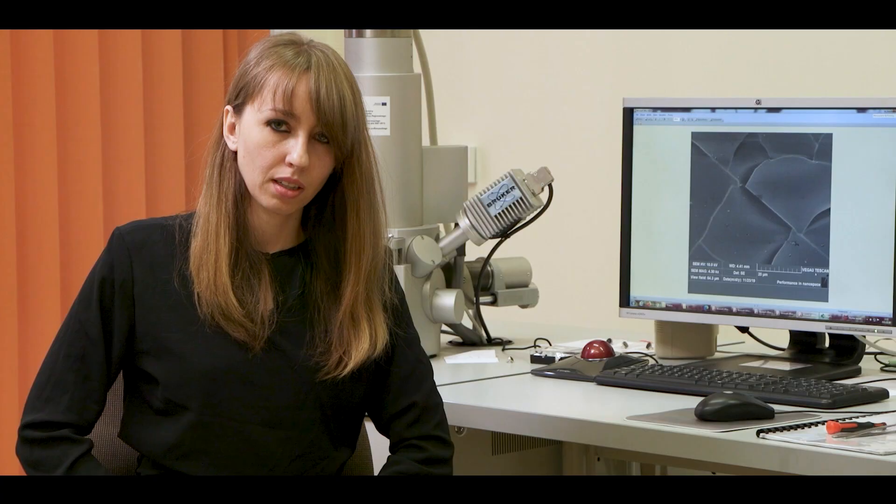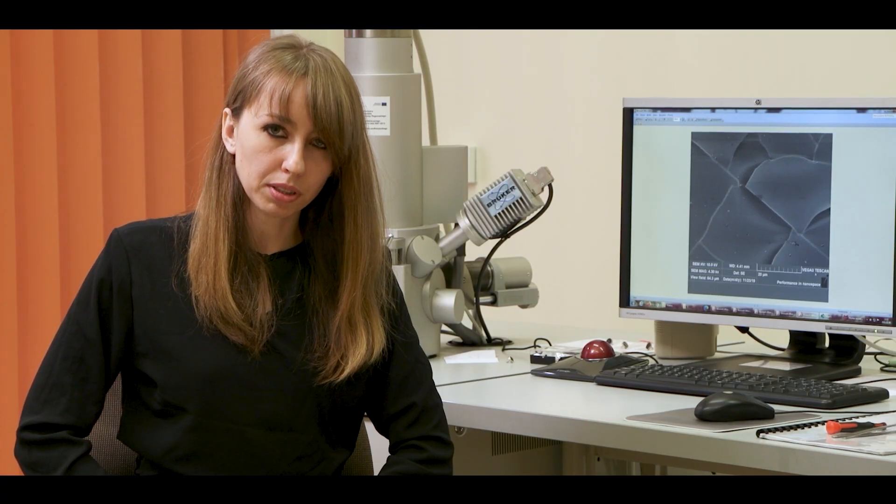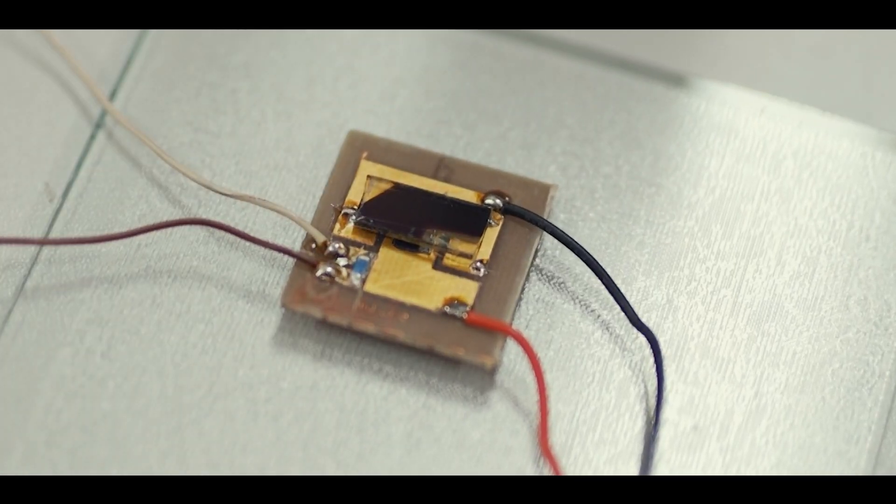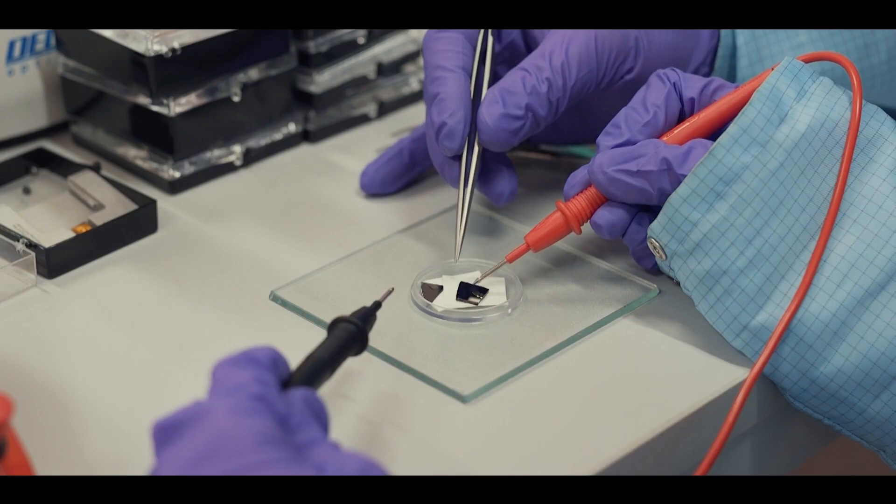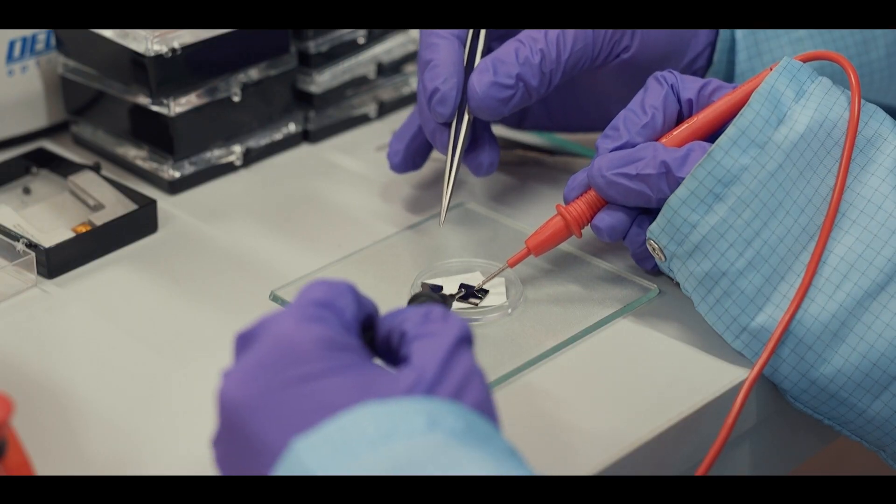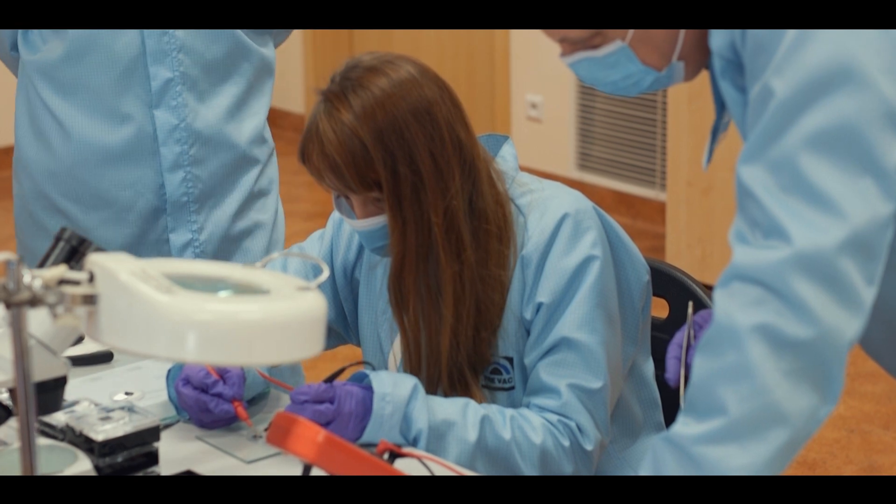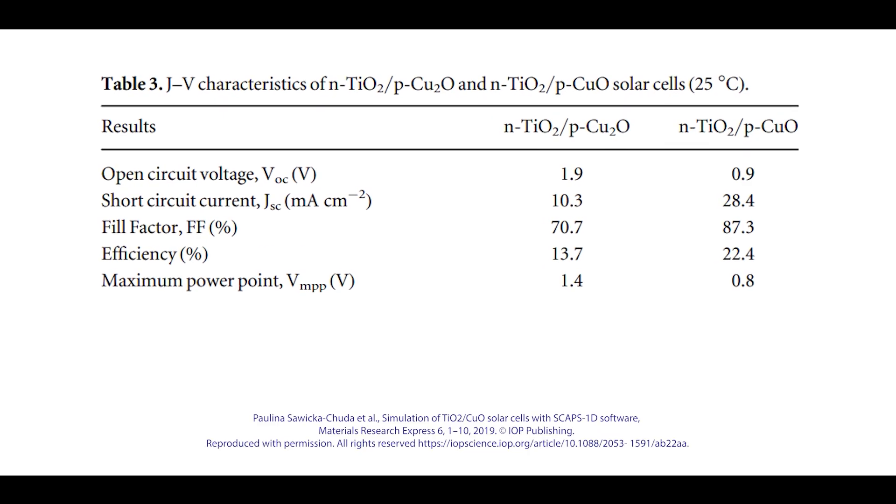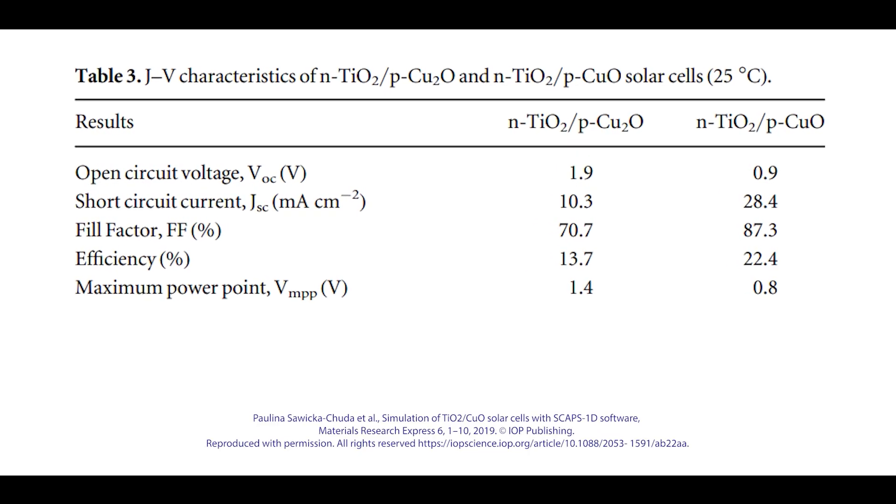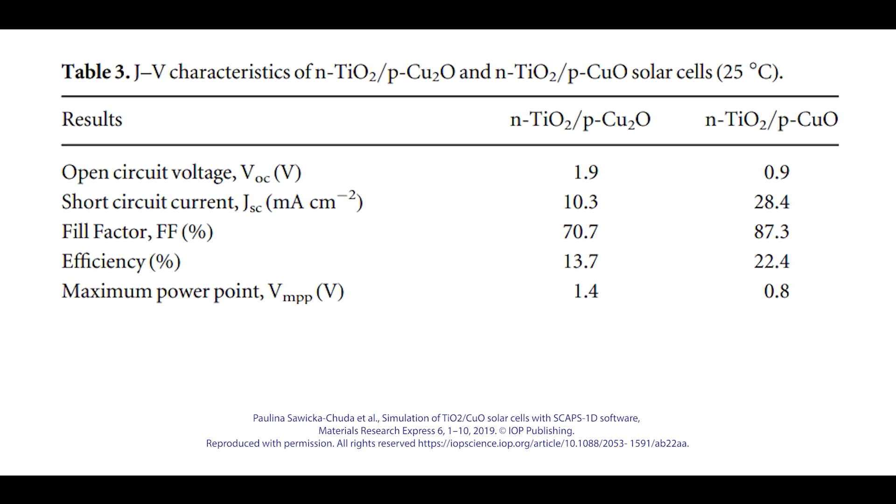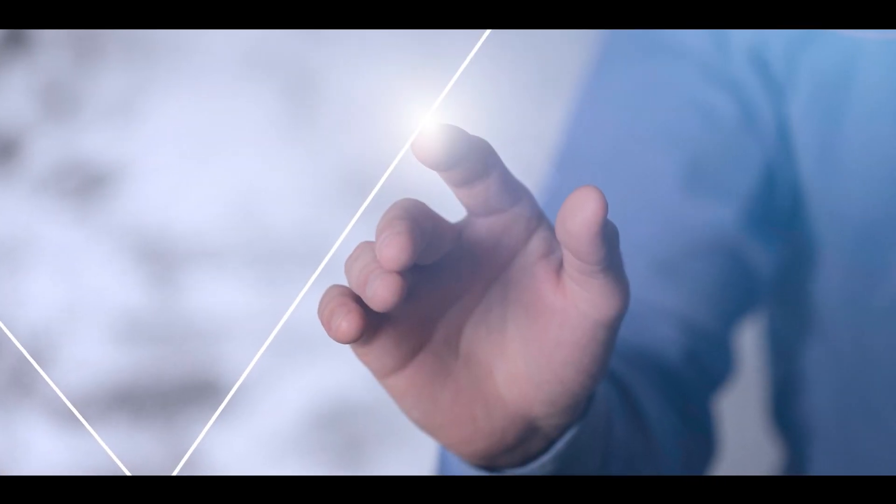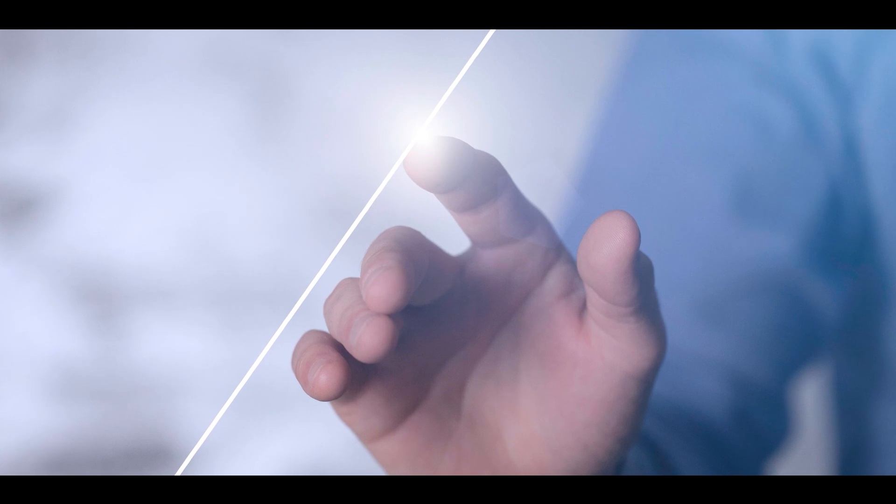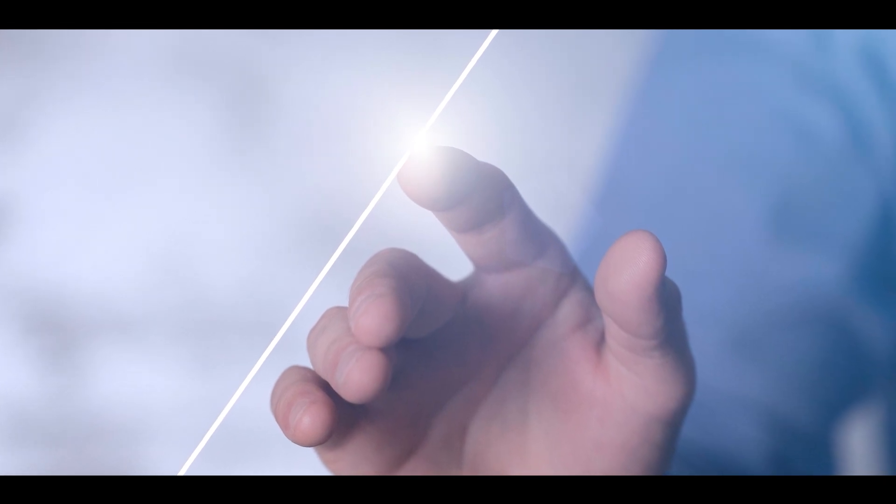The Solar Source Capacitance Program was used to perform the simulations. The photovoltaic parameters obtained from the simulations for solar cells, titanium dioxide, cuprous oxide and titanium dioxide, cupric oxide are shown in table 3.